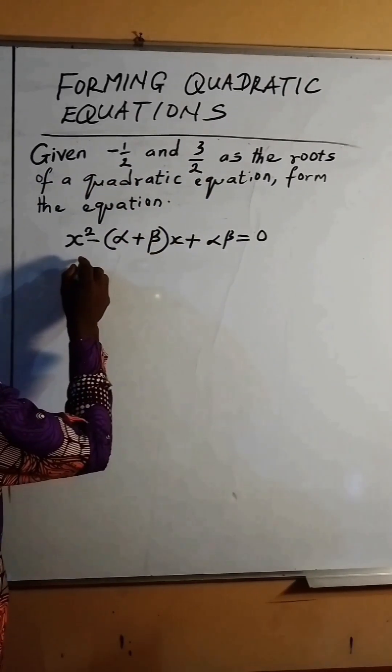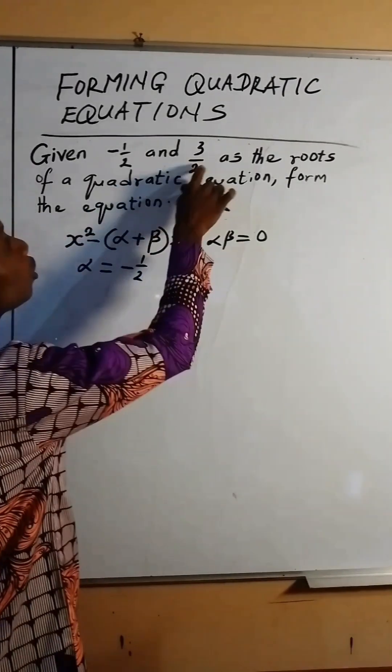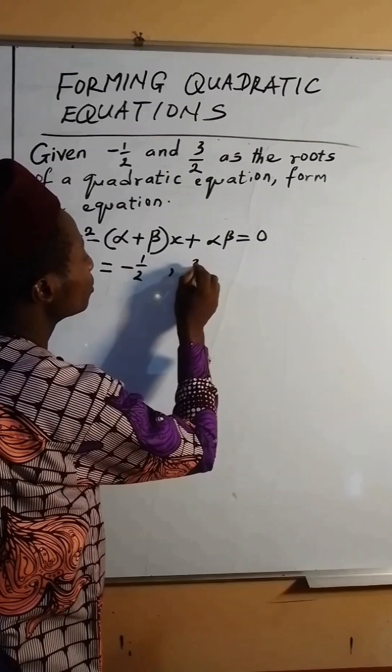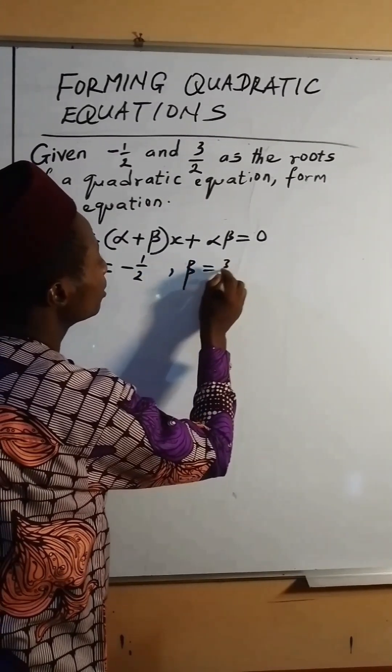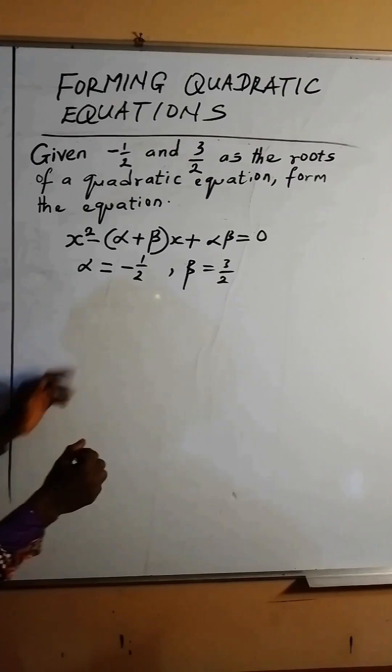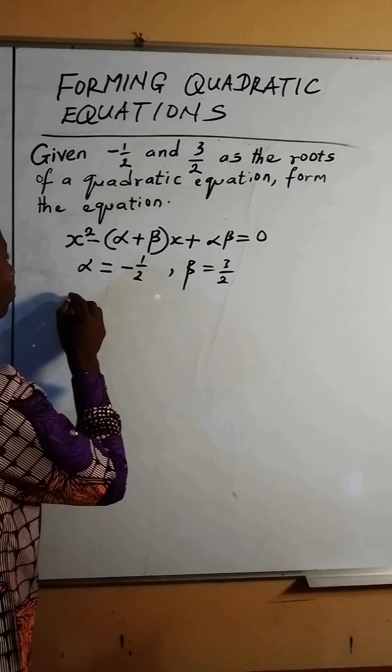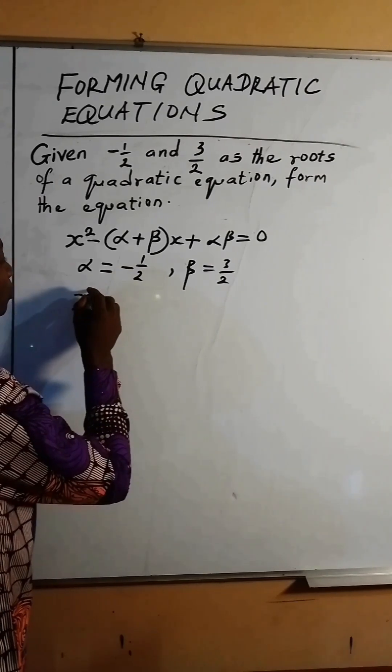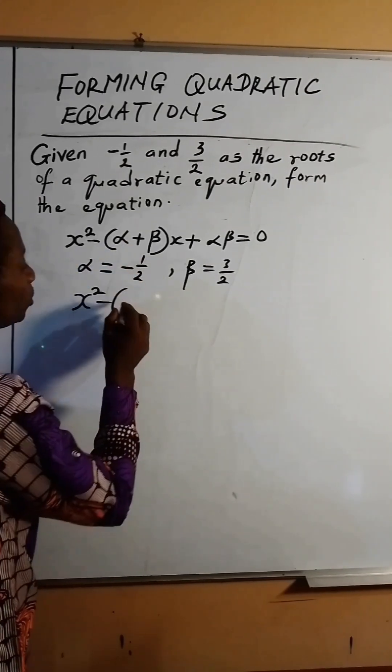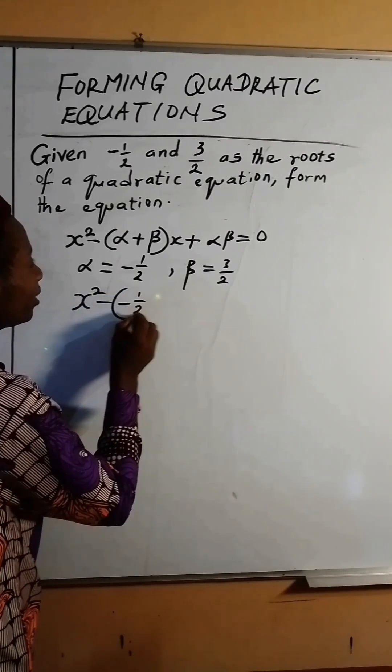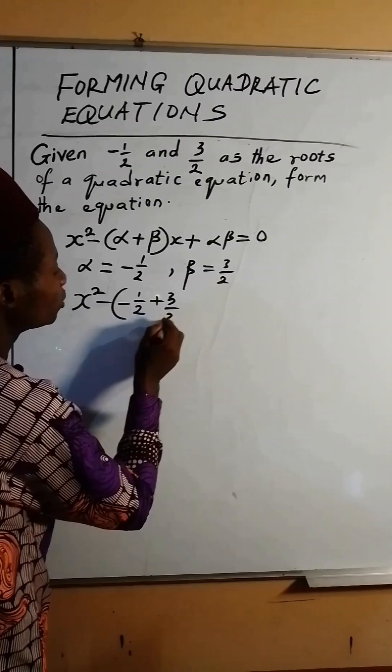The first root becomes alpha, which is minus half, while the second root becomes beta, which is 3 over 2.